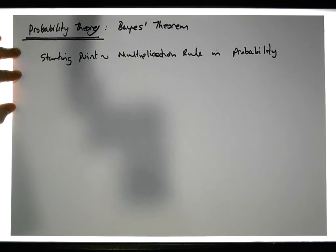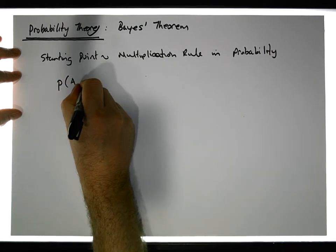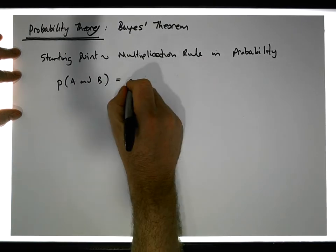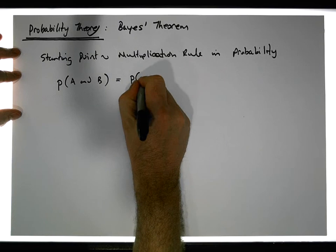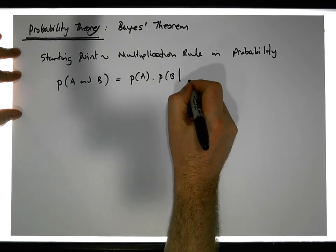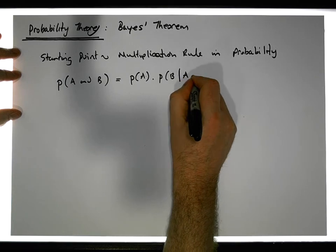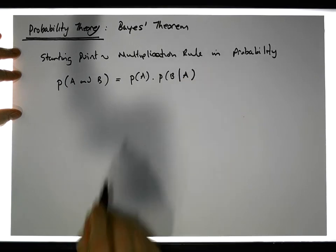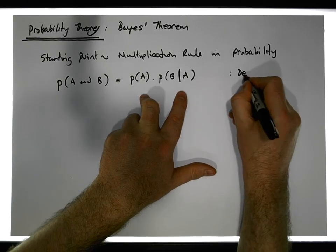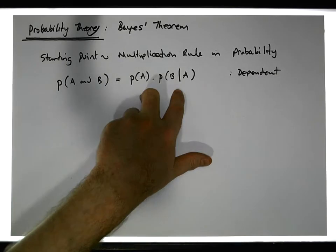What does the multiplication rule say? Well, it says that the probability of A and B is simply equal to the product of the individual probabilities — the probability of A times the probability of B, conditioned on knowing that A has happened. This is the dependent scenario, not one of independence.